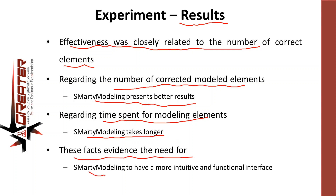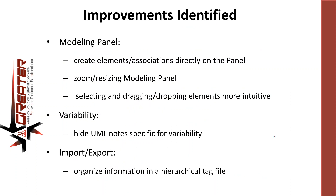Having analyzed the results of both studies, we identified the following improvements. In the modeling panel of smart modeling, we need to create elements and associations directly on the panel rather than using a dialog screen. We also need to optimize zoom, resizing of the modeling panel, and make selecting, dragging, and dropping elements more intuitive. Regarding variability, we have to hide UML nodes specifically for variability to reduce diagram pollution, and improve import and export functionalities by organizing information in a hierarchical tag file.